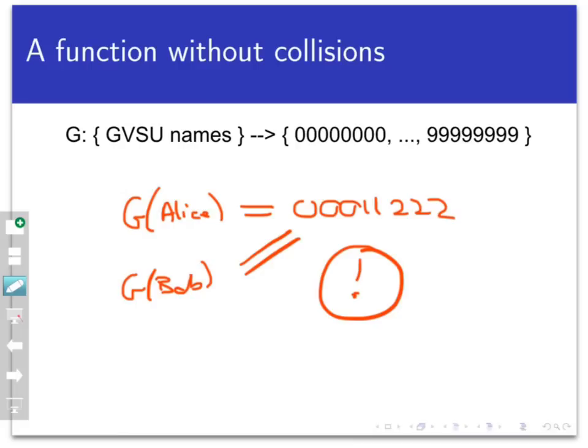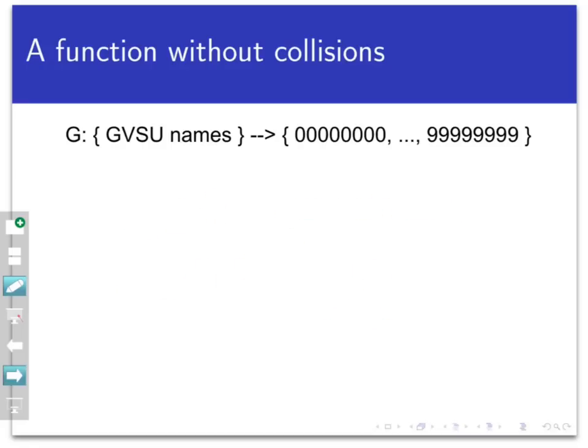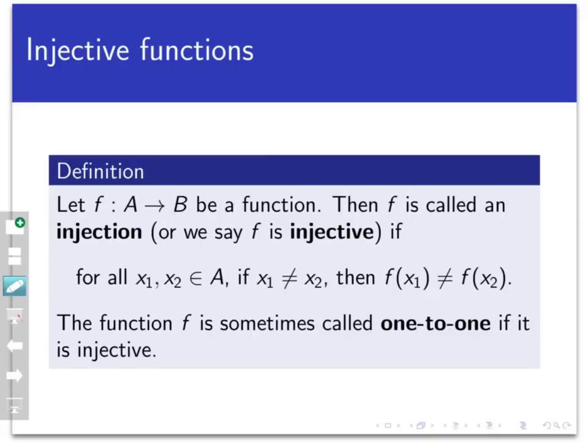So you can tell at this point that whether or not a function has collisions, or doesn't have collisions, is an important facet of that function. So we're going to give that property a special name. We're going to call a function that has no collisions an injection. And here's the formal definition. A function f from A to B is called an injection, or in adjective form, we can say that f is injective if,